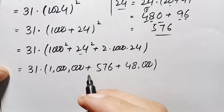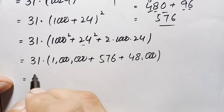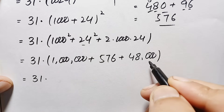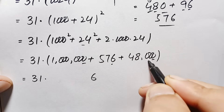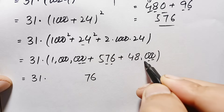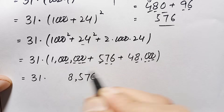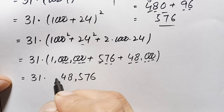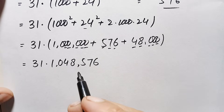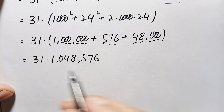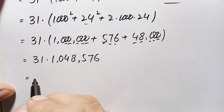Now we add these three numbers and then multiply the result by 31. Adding from the ones position: 1,000,000 plus 576 plus 48,000. The addition of these three numbers gives 1,048,576. We now need to multiply this number by 31 without any calculator and without standard long multiplication.